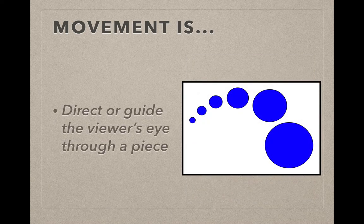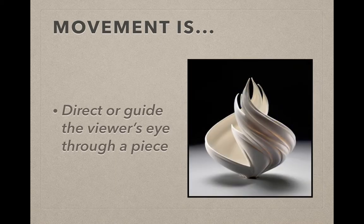We can also use movement to direct or guide your viewer's eye through or around a piece. So in this example, your eye follows the arc of circles, either from small to big or vice versa, but your eye never goes directly from the small one to the big one without traveling along the arc of blue circles.